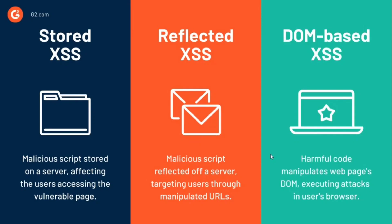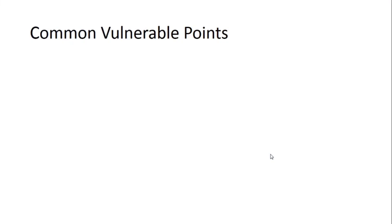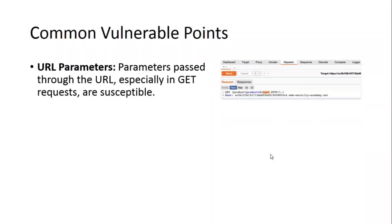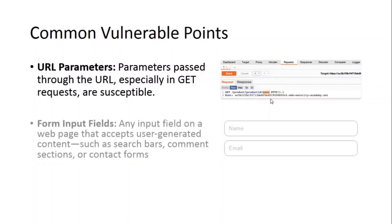In simple words: in Stored XSS the payload is stored on the server; in Reflected XSS the payload is part of a request and is reflected back; in DOM-based XSS the payload affects the Document Object Model. Common vulnerable points for Reflected XSS include URL parameters — parameters passed through the URL, especially in GET requests, are susceptible. As shown in the picture, where the product ID has the value of 'test', if that value is reflected back in the response, it could be vulnerable to Reflected XSS.